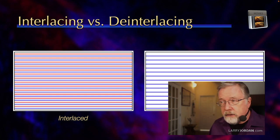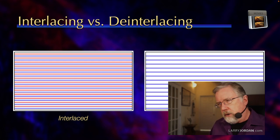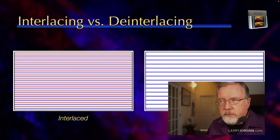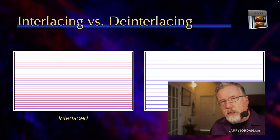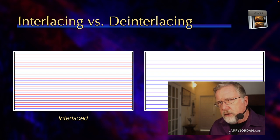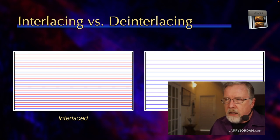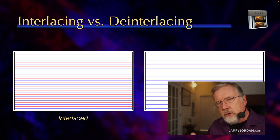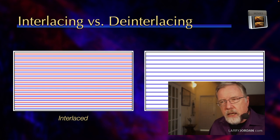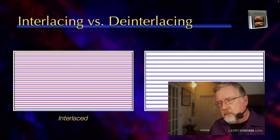We have three options. One: I let the lines just go missing — that cuts our vertical resolution in half and looks grotesque, and nobody does that. The second option is I simply duplicate all the blue lines and then all the red lines. Duplication is fast and easy, but it cuts the vertical resolution in half. It doesn't look particularly great — everything looks soft. The third option is I look at the first blue line, I look at the second blue line, and I create a new line which is a dissolve between the first and the second — blending line one into line three to create a new line two. It's called frame blending.